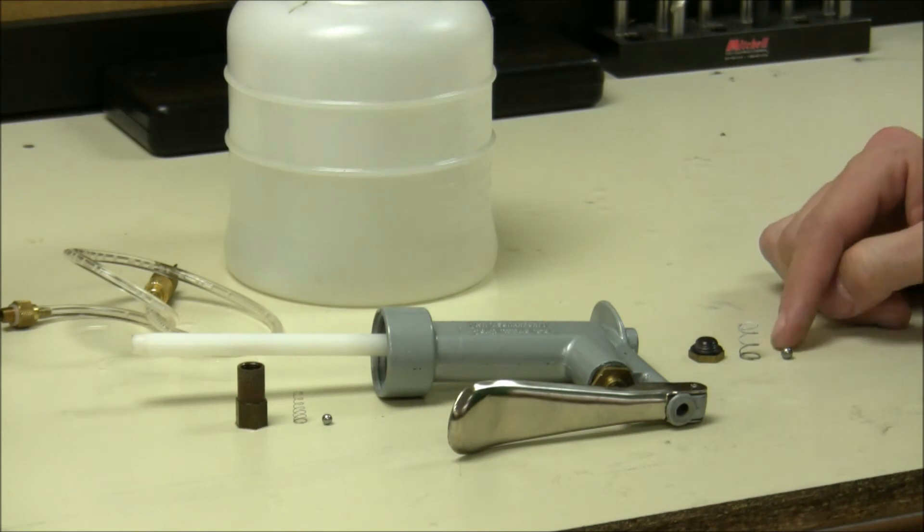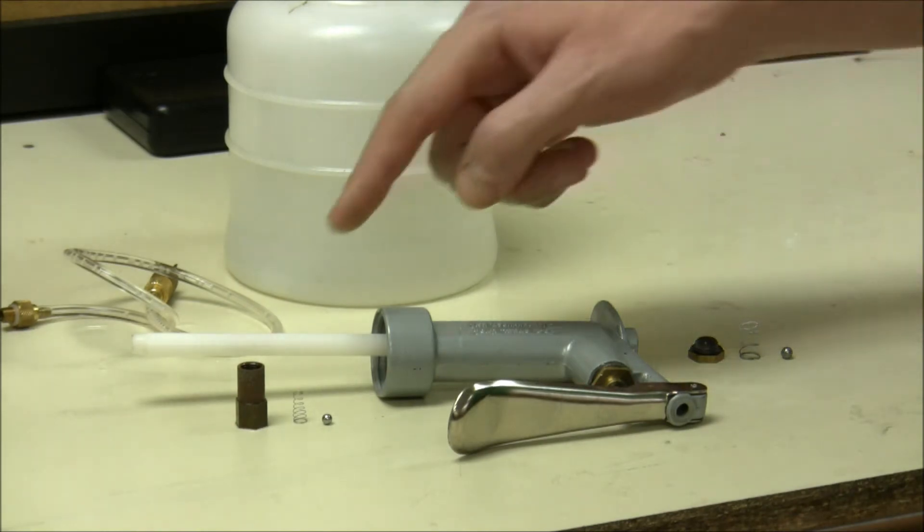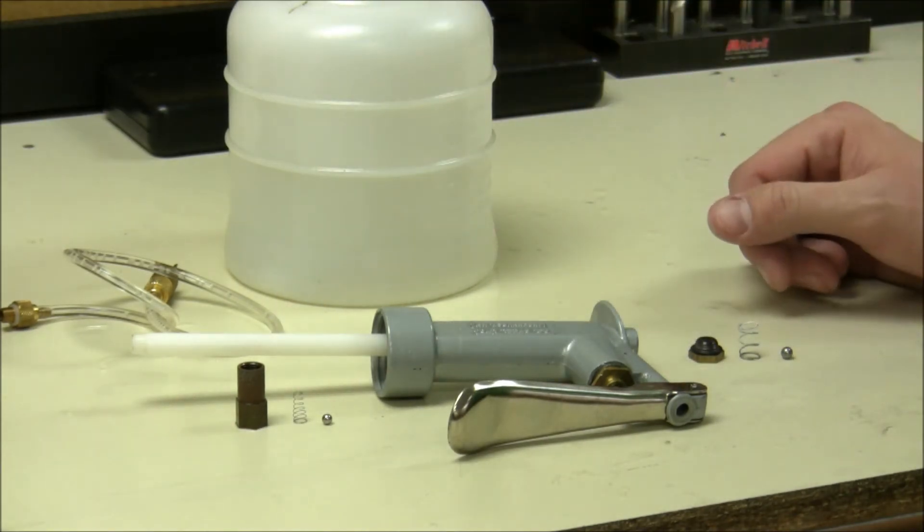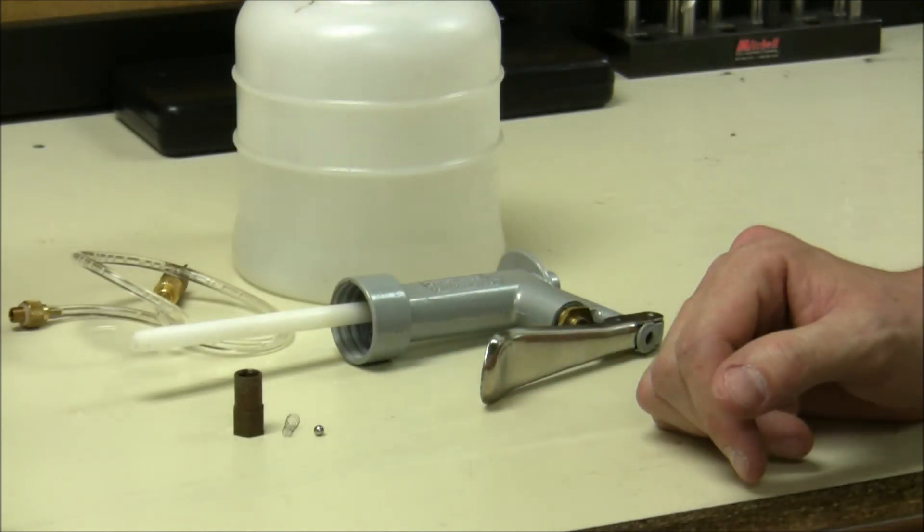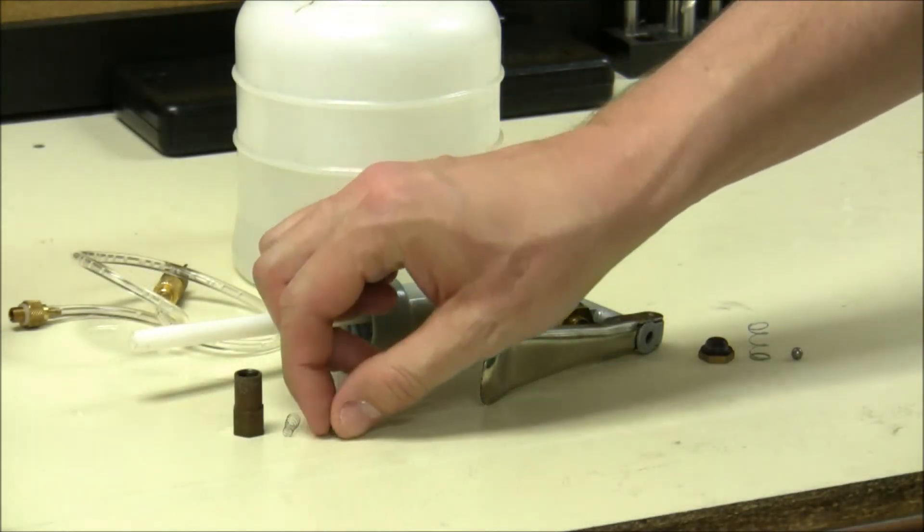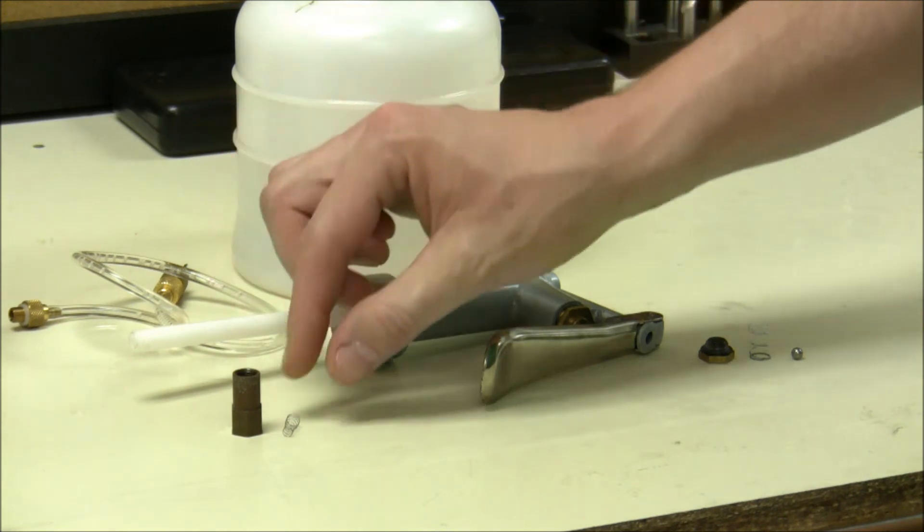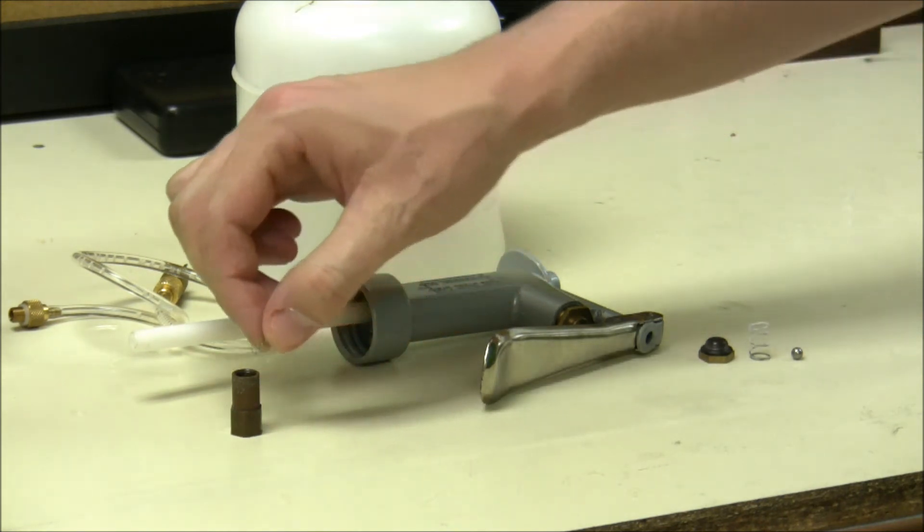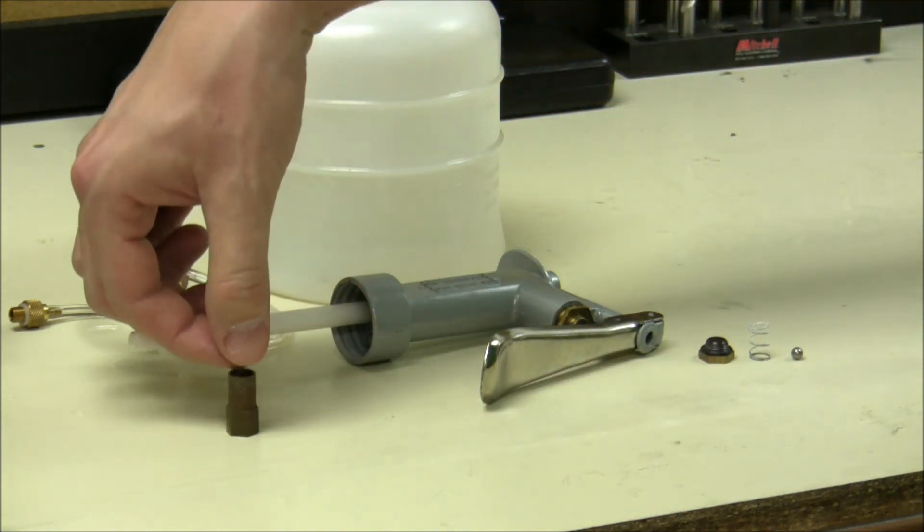After thoroughly cleaning the bearings and springs, replace them in the following fashion. For the bottom assembly, replace the ball bearing first, then replace the spring with the small end touching the ball bearing.